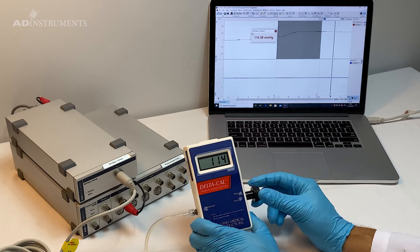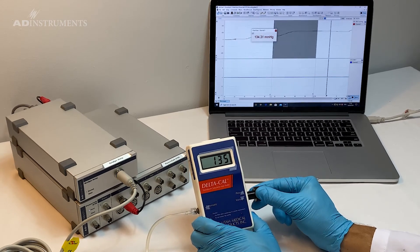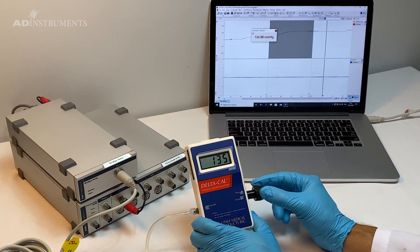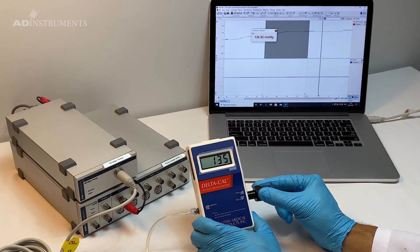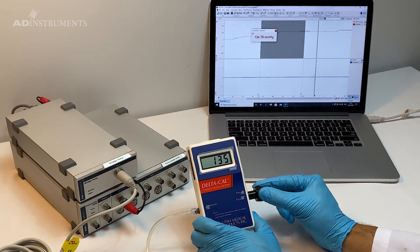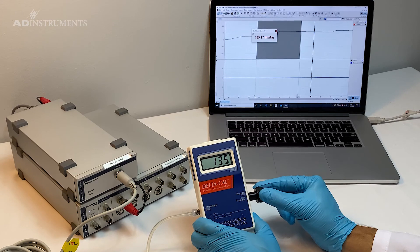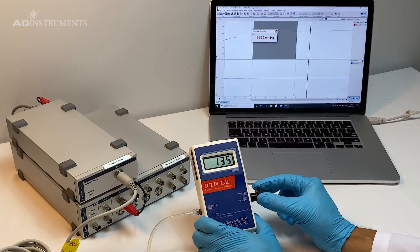If I click, let's do 135, I should have 135 on the screen, which I do. And that's it.